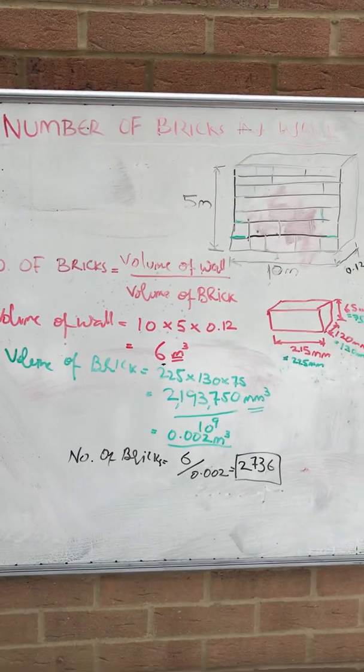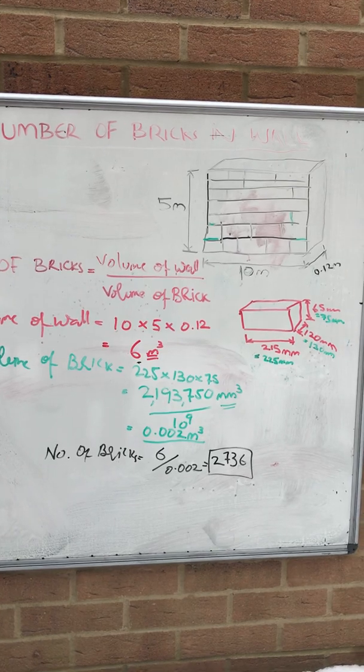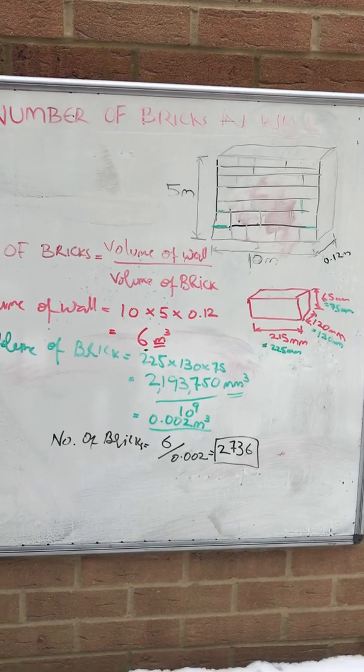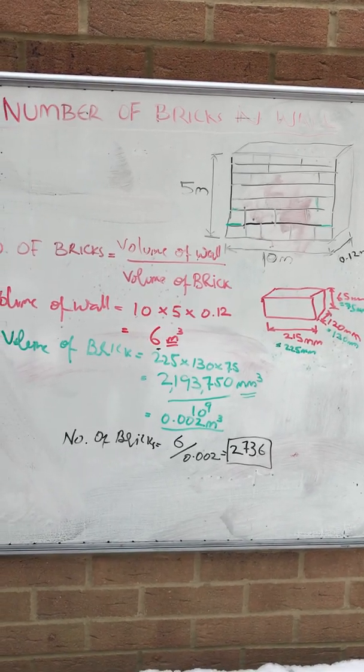So the number of bricks in 10 meter long by 5 meter high by 0.12 meter wide wall is 2,736. Thank you.